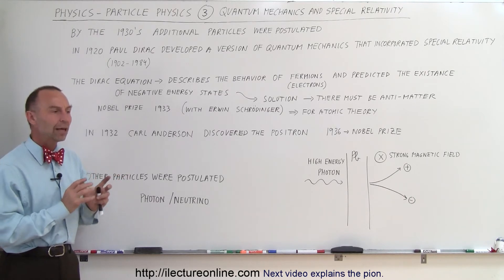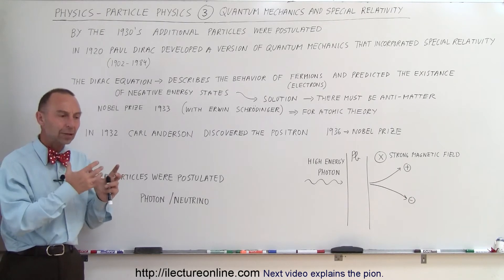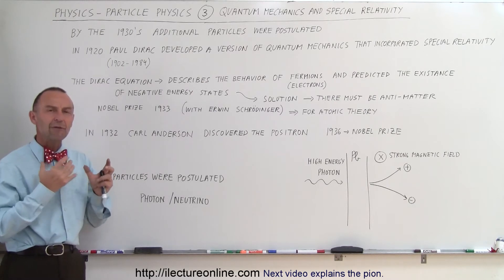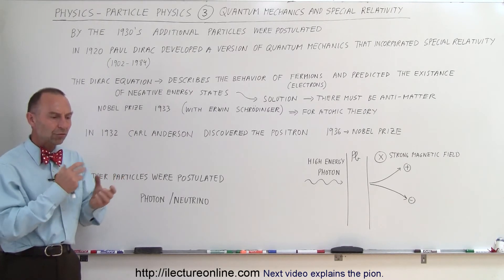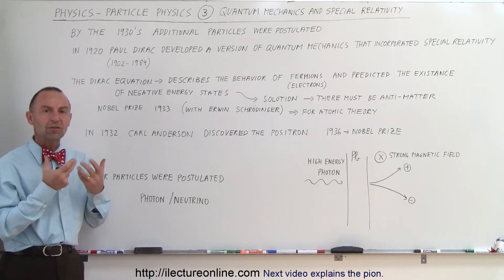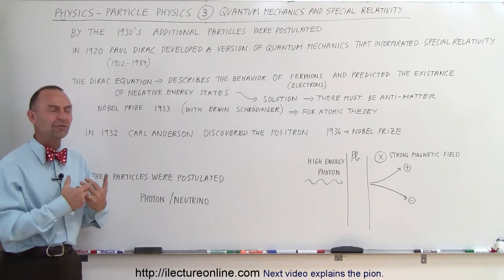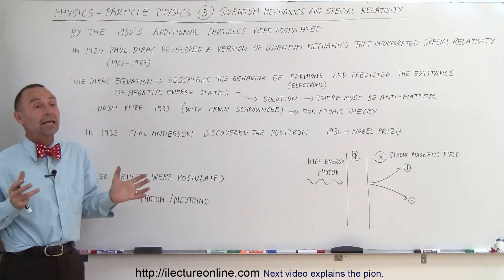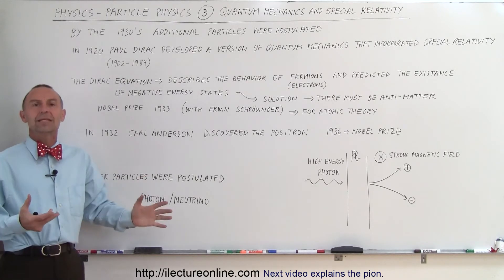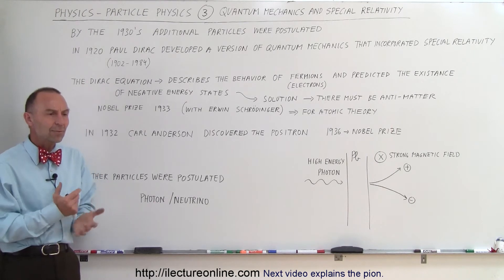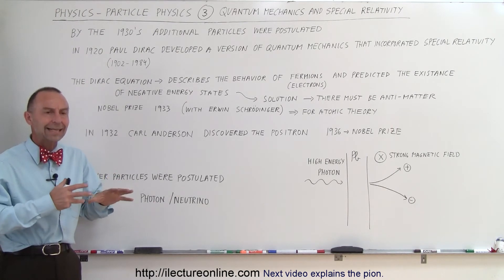But when Dirac then combined that with special relativity, a very strange result came out. From his equation that he developed, he realized that there must be such a thing as a negative energy state for an electron. Now they couldn't explain that. It's almost like being below ground level and yet being existent, and so that didn't seem to make any sense. How can a particle be at a negative energy state?